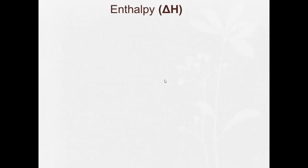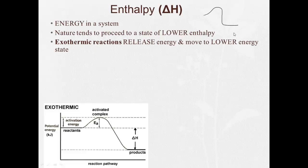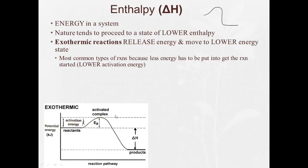All right, so then, kind of a semi-review of enthalpy, our delta H, heat of reaction. Deals with the energy in the system. Nature is going to tend to proceed to a state of lower enthalpy. Well, what kind of reaction is that? It's an exothermic reaction. They release energy and move to a lower energy state. Exothermic reactions are the most common types because less energy has to be put in to get the reaction started. There's a lower activation energy.